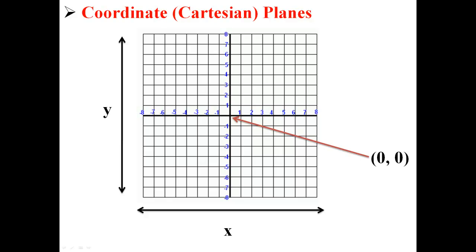Running vertically, or running up and down, is the y-axis, which also runs from negative 8 to 8.